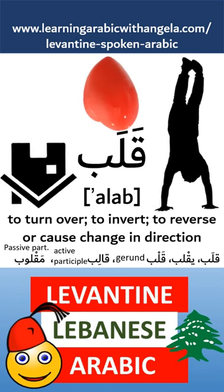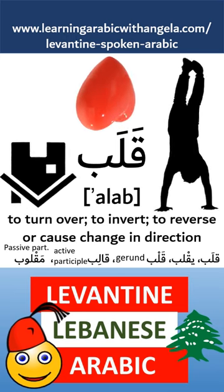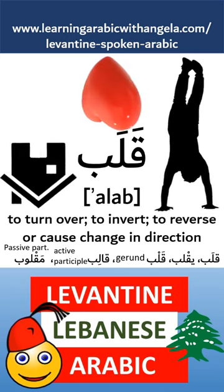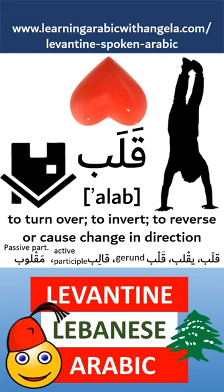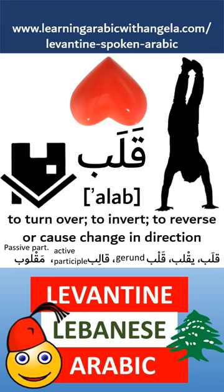How to say 'upside down' or 'inside out' in colloquial Lebanese Arabic? First, let's start with the verb ألب, meaning to turn over something. ألب يقلب, gerund ألب, and the passive participle مألوب.